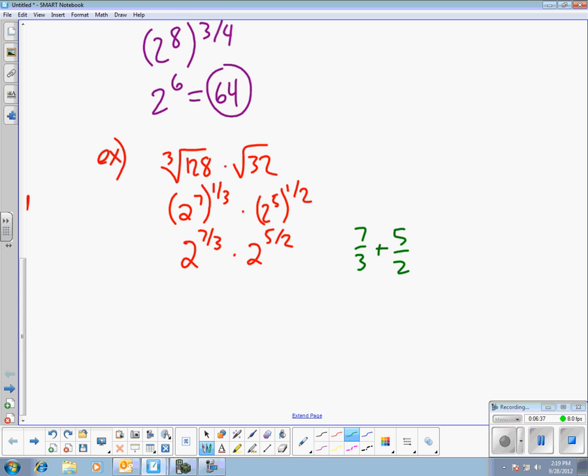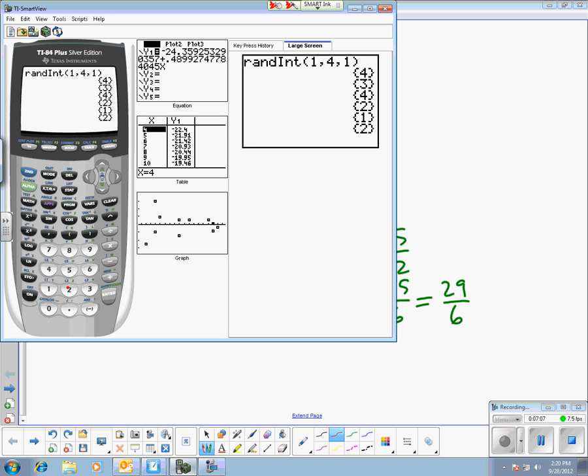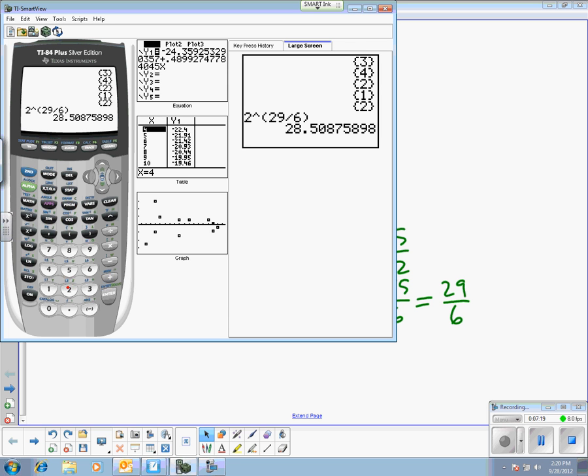All right, so these are going to have a common denominator of, looks like six is my best option. It's 14-sixths plus 15-sixths. My least favorite word is sixths. 29 over 6 ends up being your exponent. So this is 2 to the 29-sixths. And it says to check with a calculator to confirm. 2 to the 29-sixths. Let's see here. 2 to the power 29 over 6 in parentheses is 28.5. My original question was, what's the cube root of 128 times the square root of 32?